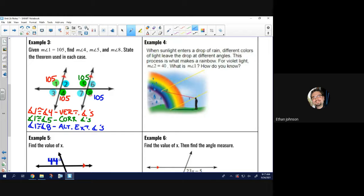Example 4. It's kind of hard to see. I'm going to draw over my picture. Making our parallel lines. Kind of extended. And there is our transversal. According to the problem, when sunlight enters a drop of rain, different colors of light leave the drop at different angles. This process is what makes the rainbow. For violet light, measure of angle 2 equals 40. What is the measure of angle 1?